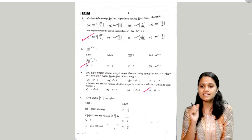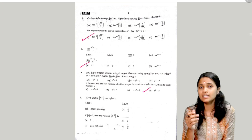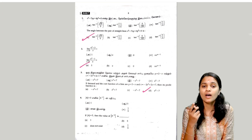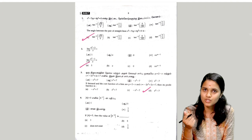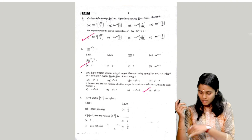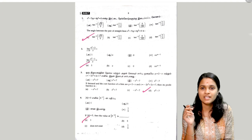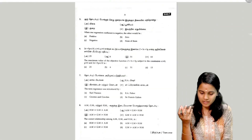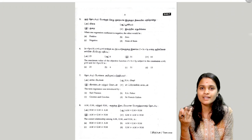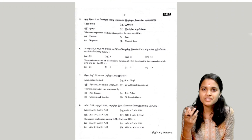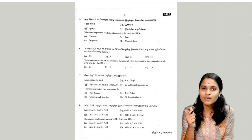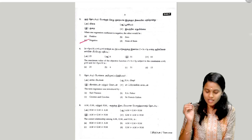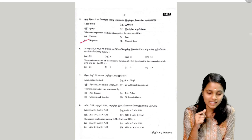The next question is the determinant value, and we will calculate A inverse. So the answer is A. The next question: when one regression coefficient is negative, the answer is negative. So the answer is option C.